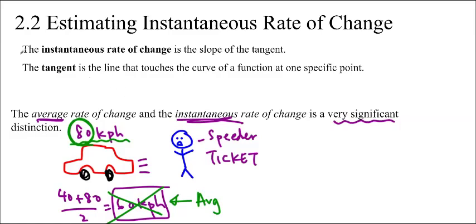In order to do that, we're going to actually find the slope of the tangent. What is the tangent? Well, the tangent is a line that touches a curve of a function at one specific point. It only touches it once.